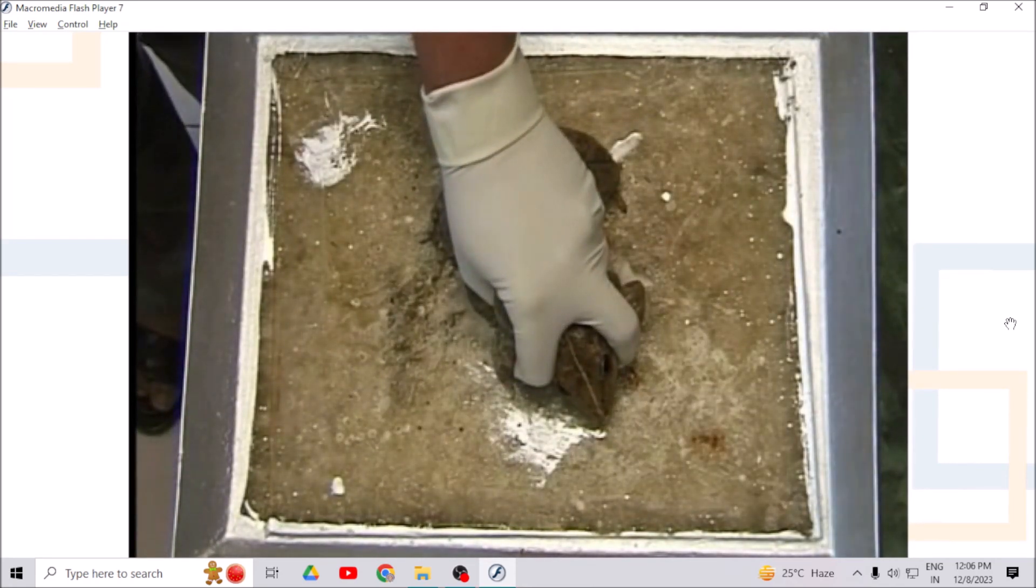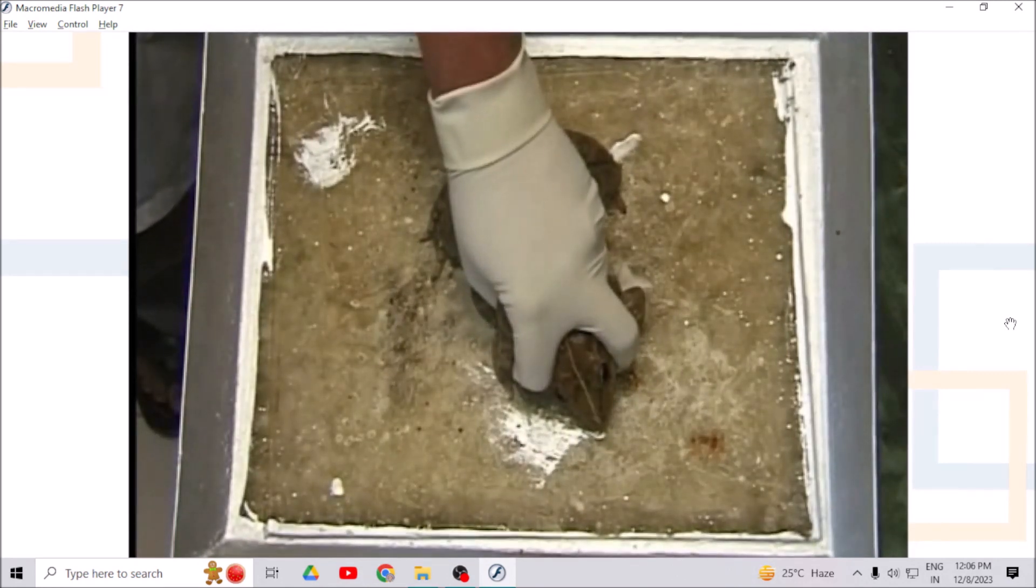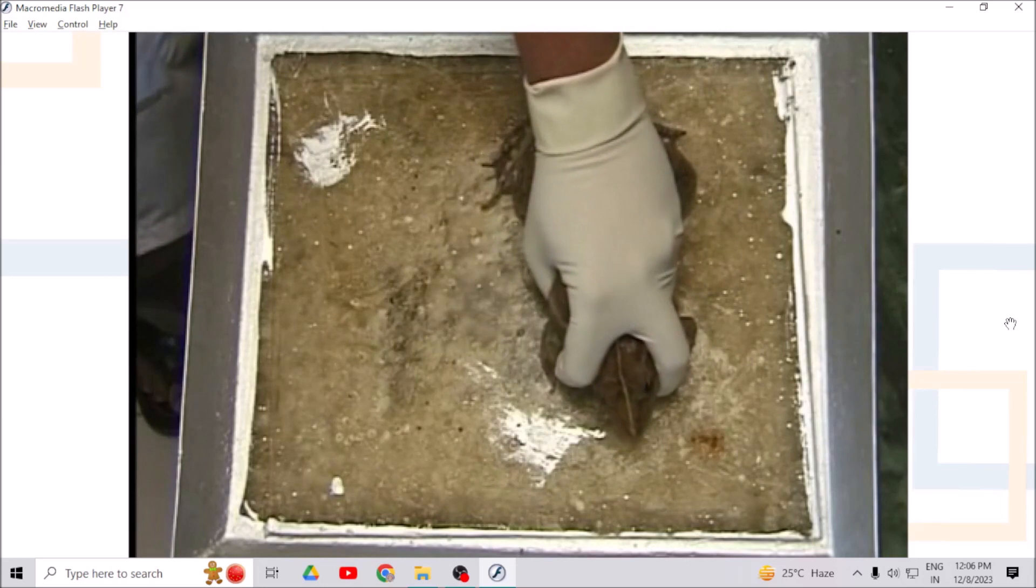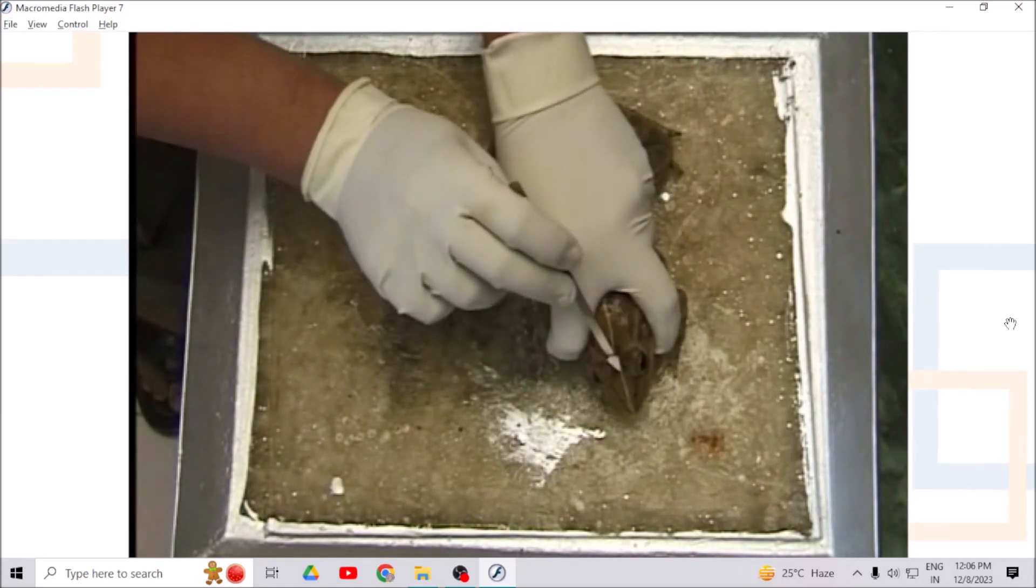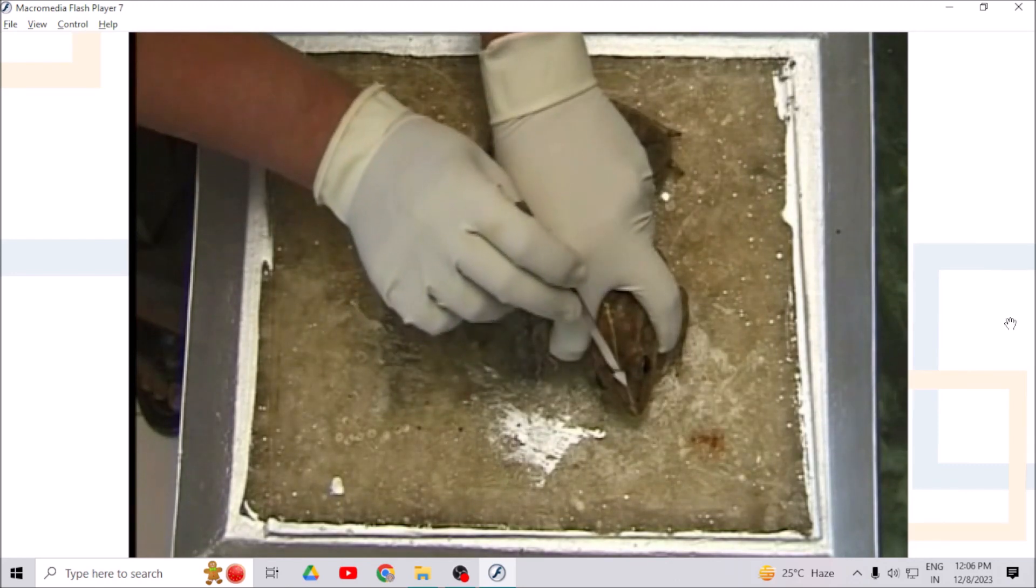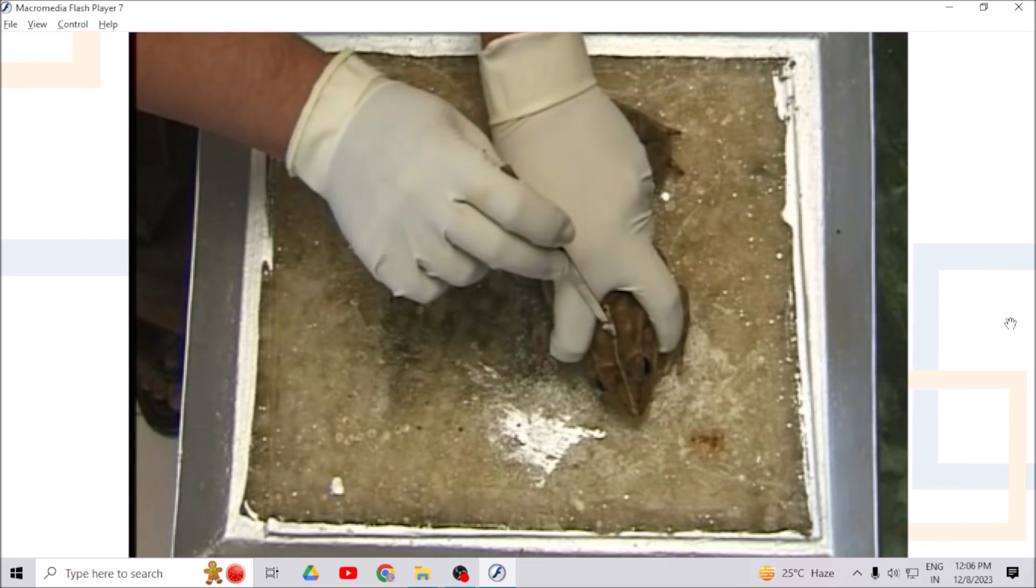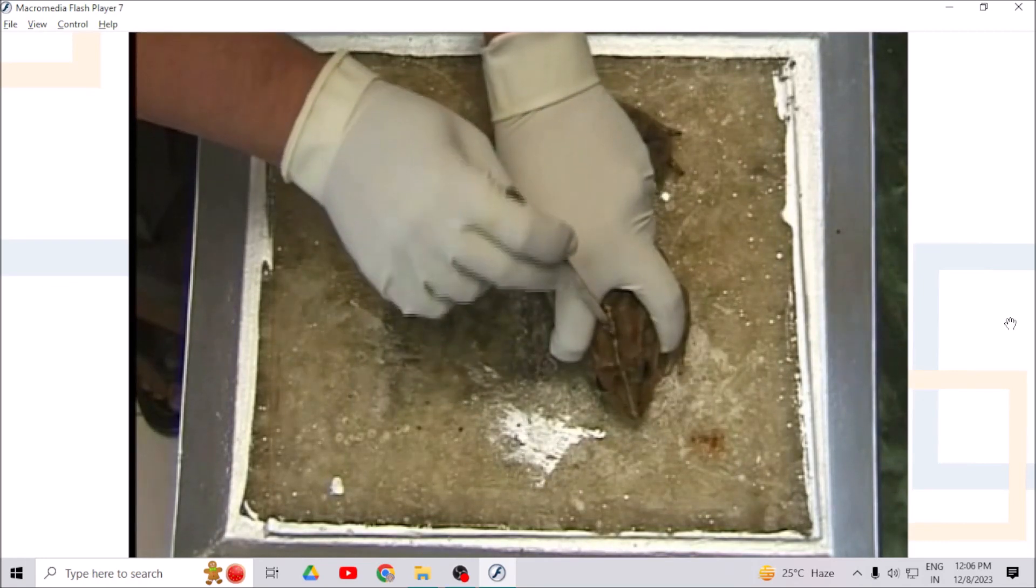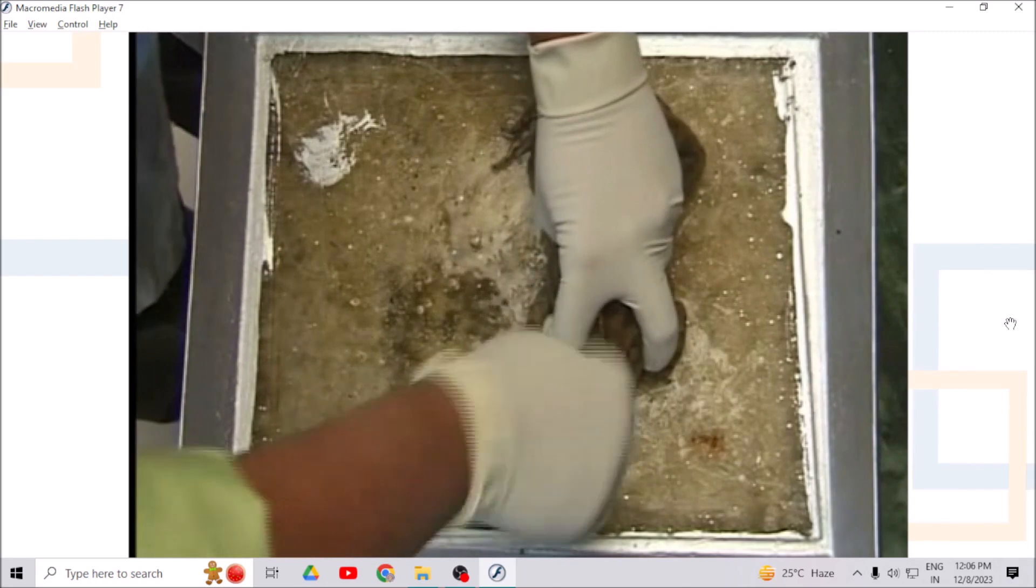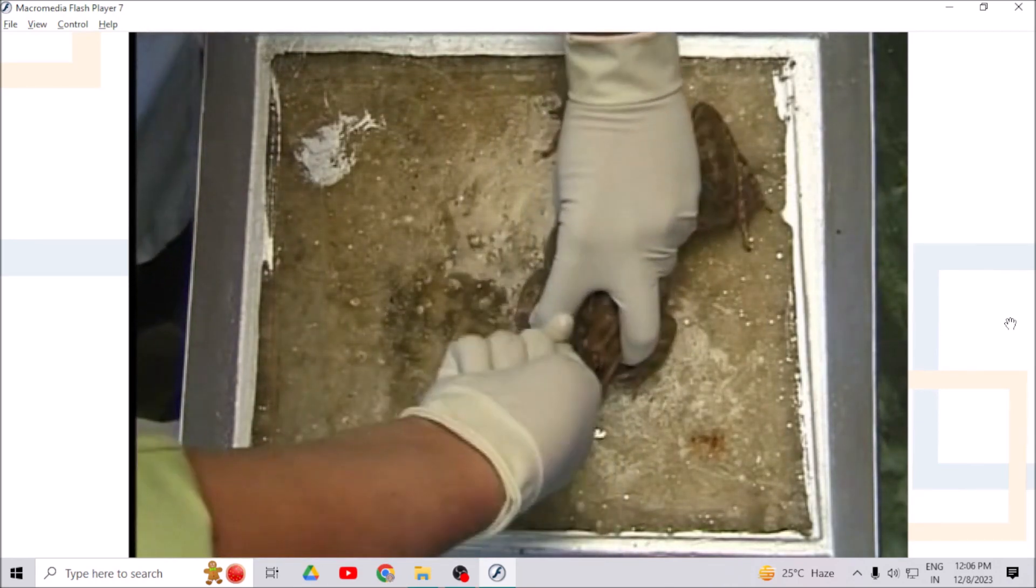Now, pith the frog with the help of a pithing needle. To pith, identify the pithing spot which is on dorsal central surface of the skull. Feel a cavity and then insert and rotate pithing needle by around 45 degrees to and fro. This leads to breaking of connection between brain and spinal cord.